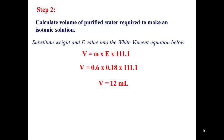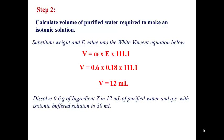This means you dissolve 0.6 grams of Ingredient Z in 12 milliliters of purified water, giving an isotonic solution. To that, you add sufficient quantities of isotonic buffered solution — 18 milliliters — to reach a total volume of 30 milliliters, which is isotonic.